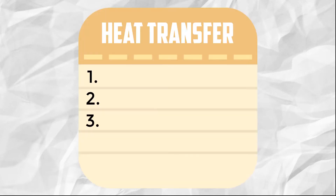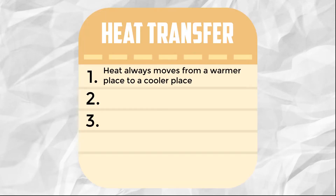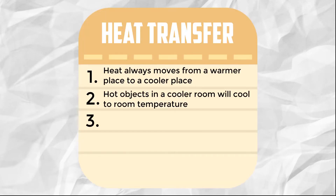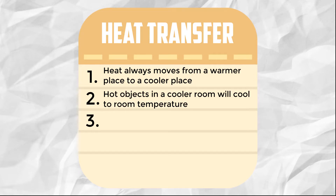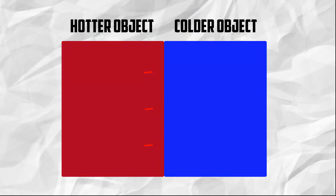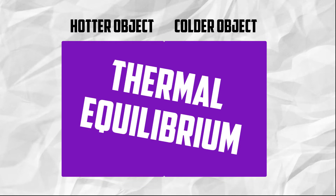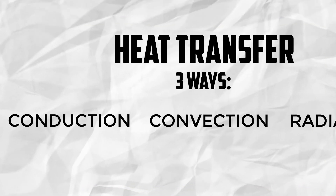In what ways does heat transfer? First, we need to know three points. Heat always moves from a warmer place to a cooler place. Hot objects in a cooler room will cool to room temperature, and cold objects in a warmer room will warm to room temperature. In other words, heat will continue to flow from hot to cold in the system until the system reaches thermal equilibrium. Heat transfer is done with three methods: conduction, convection, and radiation.